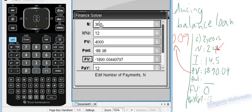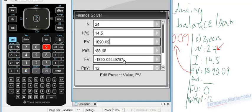So two years left. N is 24, or 2 times 12. Interest rate is 14.5. Present value, 1890.09. And notice, once again, I've taken this value rounded to the nearest cent, because that's what our bank statement would say. Payment, we don't know. Future value is zero.